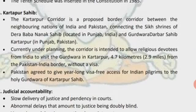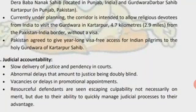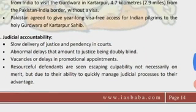Next topic: Kartarpur Corridor. The Kartarpur Corridor is a proposed border corridor between India and Pakistan connecting the Sikh shrine of Dera Baba Nanak Sahib located in Punjab, India, and Gurdwara Darbar Sahib, Kartarpur in Punjab, Pakistan. The corridor is intended to allow religious devotees from India to visit the Gurdwara in Kartarpur — 4.67 km from the Pakistan-India border — without a visa. Pakistan agreed to give year-long visa-free access for Indian pilgrims to the holy Gurdwara at Kartarpur Sahib.